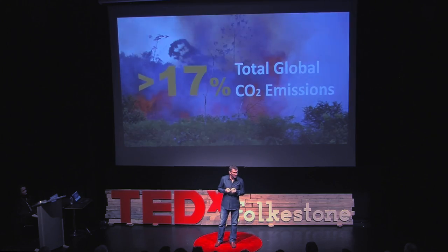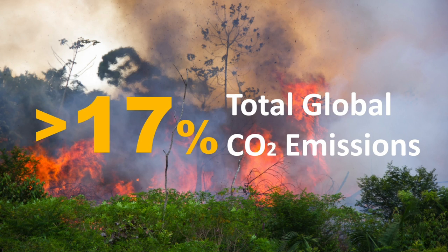Burning these peatlands releases up to 28 times more CO2 for up to a decade. Deforestation is responsible for up to 17% of total global emissions, depending on which calculation methods are used. Whilst there's some disagreement on the exact percentage, there's one thing that everyone agrees upon: if we're to stand any chance of stopping climate change, we must stop deforestation.